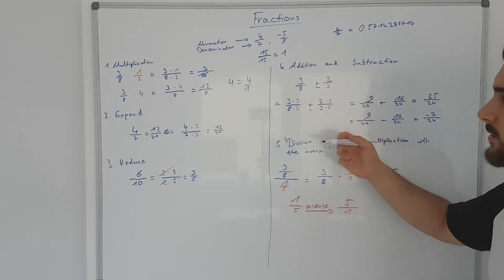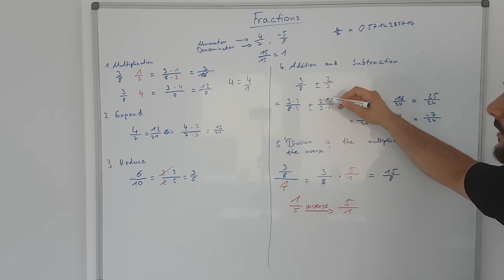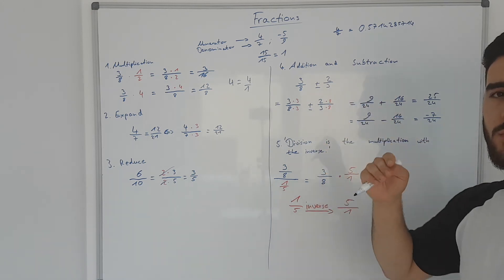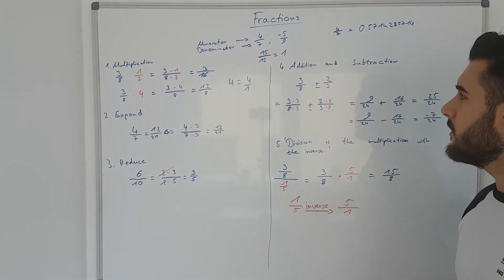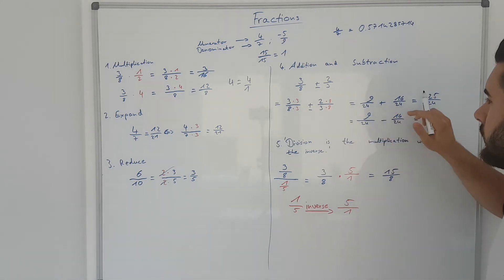So to show you a subtraction or to show you a different scenario, imagine you want to get 2 thirds away of your cake because you know you are worried that you will get problems with the too much sugar. So what you do is basically almost the same as in the addition. However, you take this second fraction away from the first one and then you get a negative fraction.